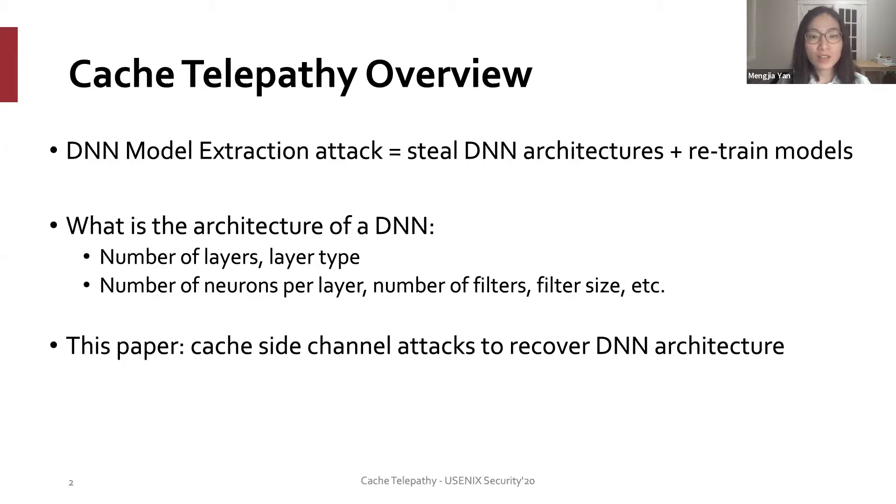So what is the architecture of a deep neural network? Intuitively, the architecture gives the shape of a deep neural network. More specifically, it defines the number of layers of a neural network, the type of each layer. For each layer, it also specifies the hyperparameters such as the number of neurons, the number of filters, and filter sizes, etc.